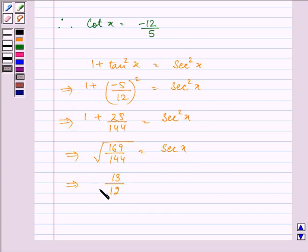Now we need to think of the sign, since it's given to us that x lies in the second quadrant. Therefore, the value in the second quadrant will be negative. So we have -13/12.